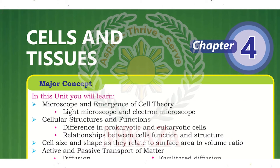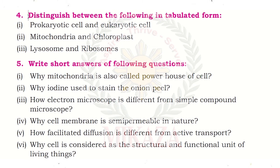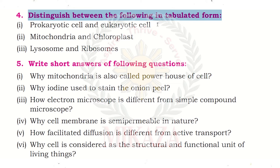Assalamu alaikum. We will be continuing chapter number four: cells and tissues. We are going to do the differentiation between prokaryotic and eukaryotic cells, mitochondria and chloroplasts, and lysosomes and ribosomes.